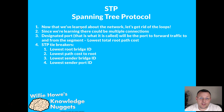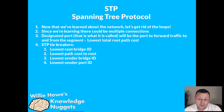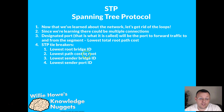Now that we've learned about the network, it's time to get rid of any potential loops. There could be loops because we may still have multiple connections to each switch. We are going to select a designated port — a port that will send data from the switch out to the segment — selected based on the lowest total root path cost. If there is a tie, it is broken by: lowest root bridge ID, lowest path cost to root, lowest sender bridge ID, then lowest sender port ID.